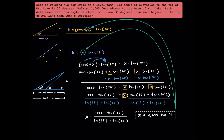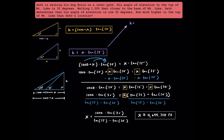Now that we found x, we can substitute it into either one of these equations to solve for the height of Mount Luke. Since the lower equation is a little simpler, I'm going to use that one. Substituting in, we're going to get that h is equal to 4,699.358 multiplied by tangent of 35 degrees. Finally, we figured out the height of Mount Luke, which is about 3,290.536 feet tall.